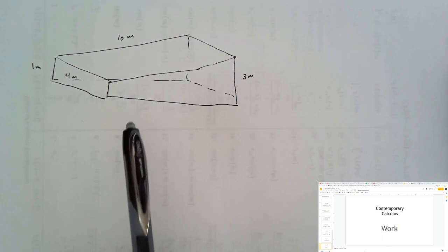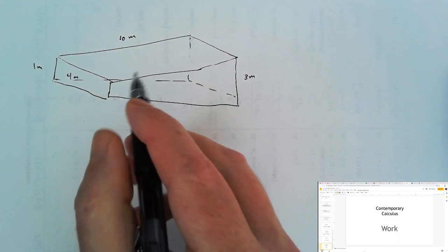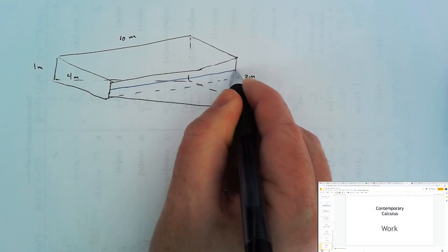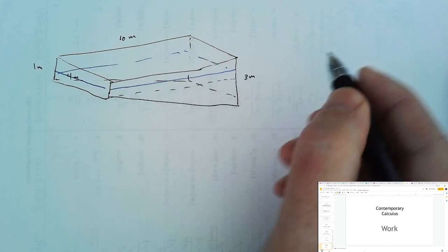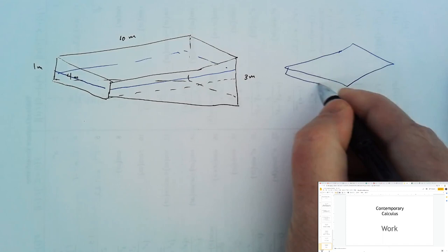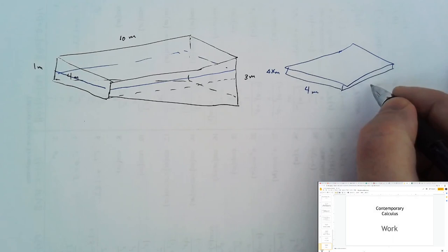how much work is required to empty the swimming pool by pumping all of the water over its top edge? What we need to think about is all of the water that gets lifted a particular distance. For the top 1 meter of water that's in the pool, if we take a small slice of that water, we would get a rectangular shape that would be delta x meters tall,